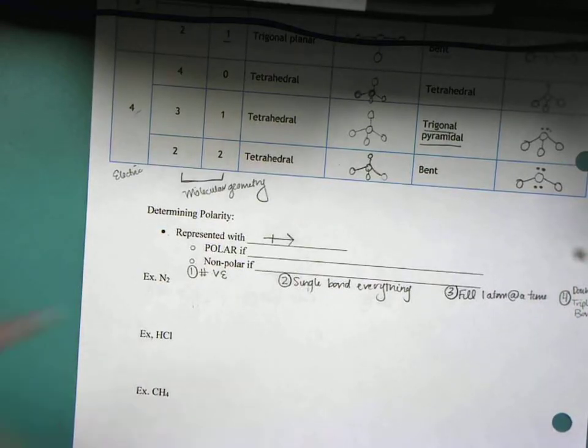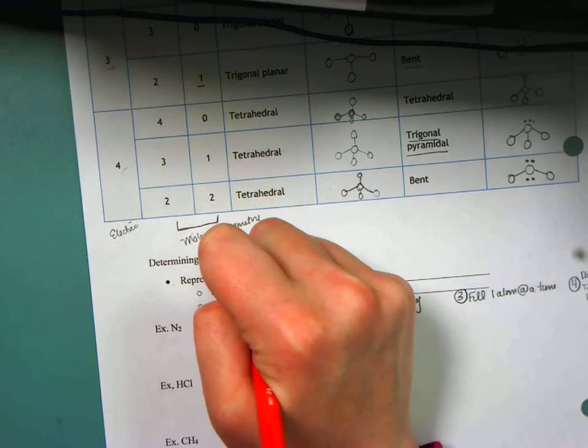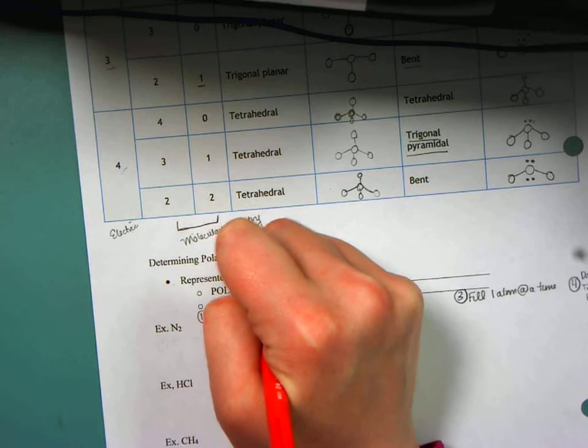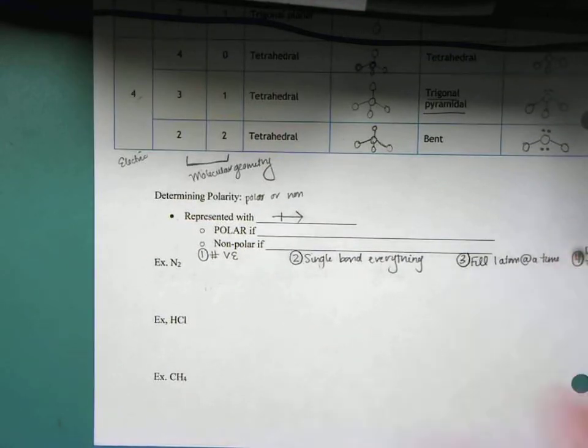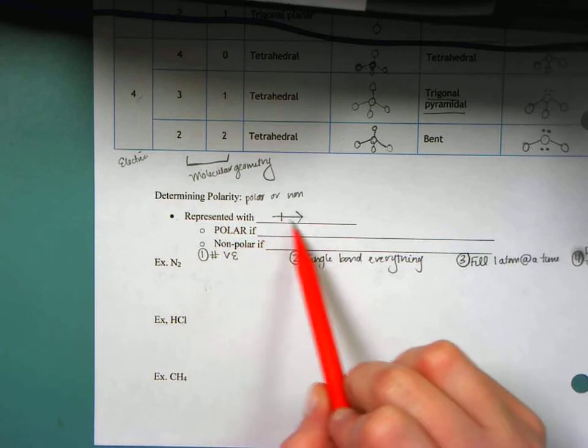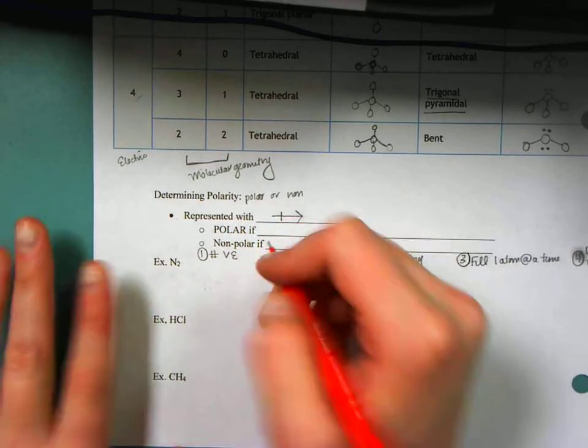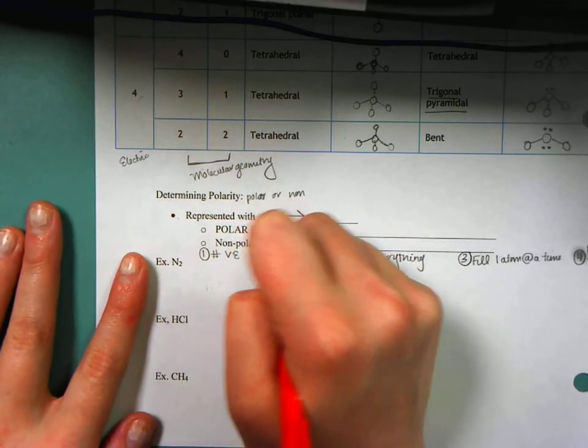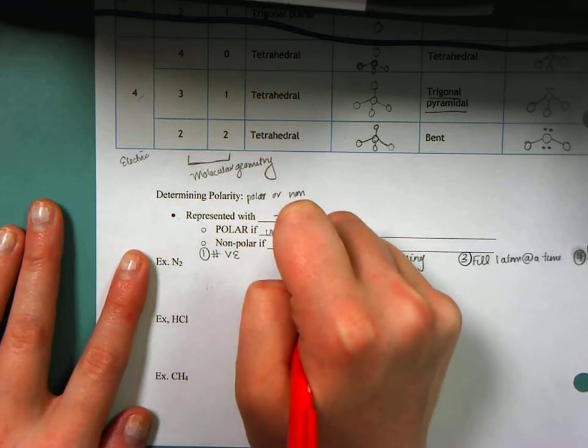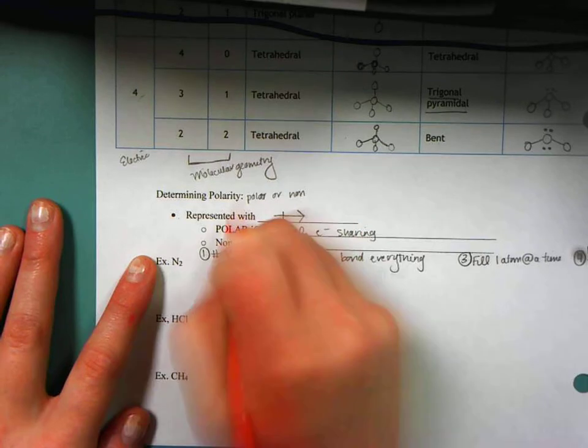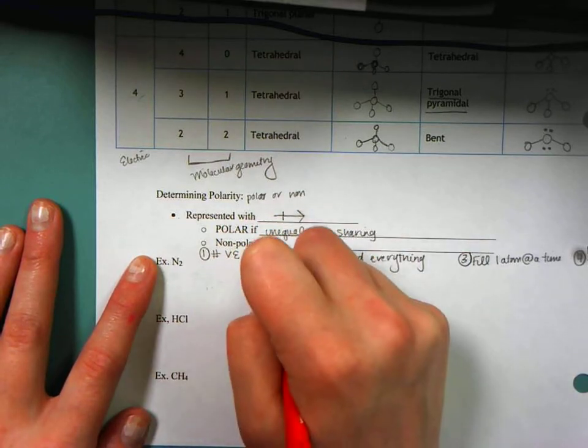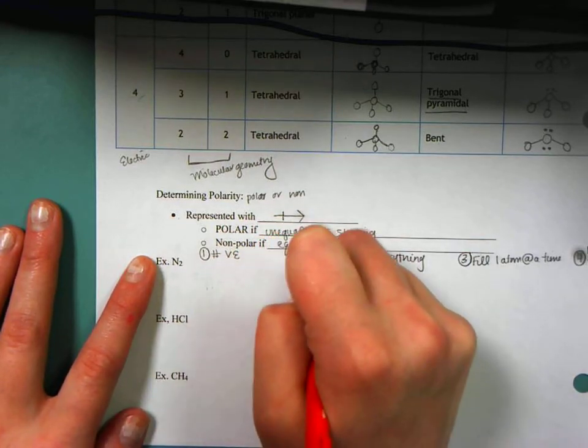Next up, we want to determine polarity. So polarity means polar or nonpolar. And we typically represent if something, the pole of something with this kind of arrow. So I know it's polar if unequal electron sharing. And then it's nonpolar if I have equal electron sharing.